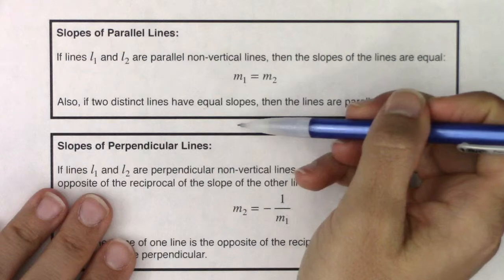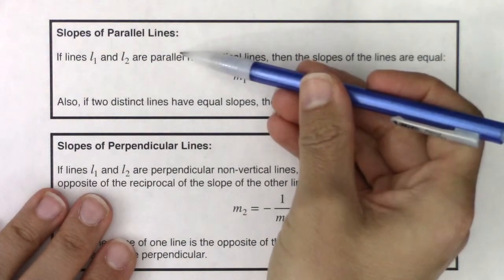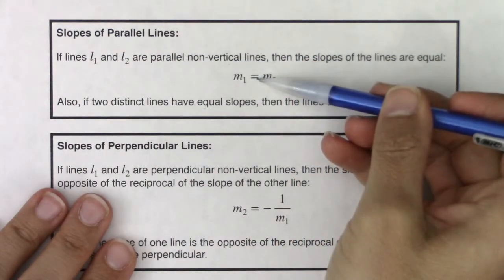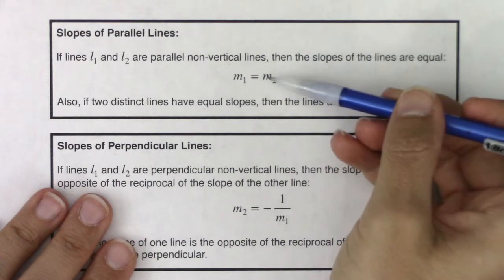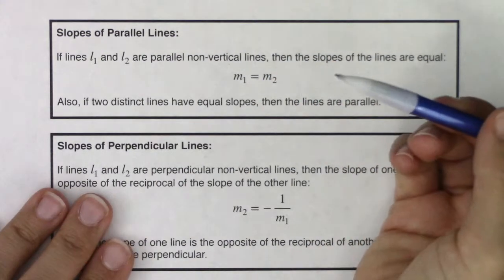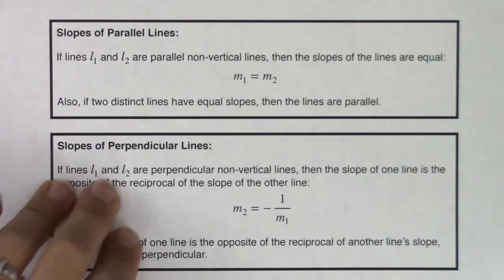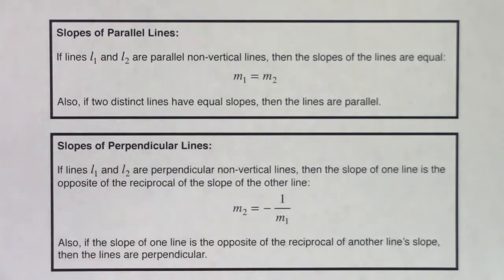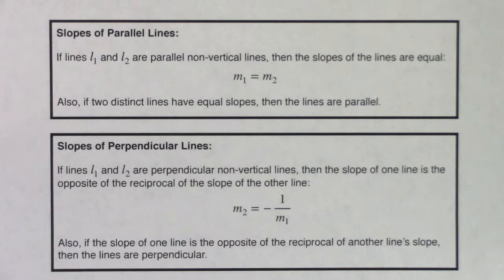So this is an if and only if statement, meaning if you tell me the lines are parallel, I know they have the same slopes. But if I'm looking at two lines and I see they have the same slopes, then I know they're parallel. All right, now the perpendicular lines, they have slopes that are a little bit more intricate in terms of how they're connected to each other. So let's unpack that.